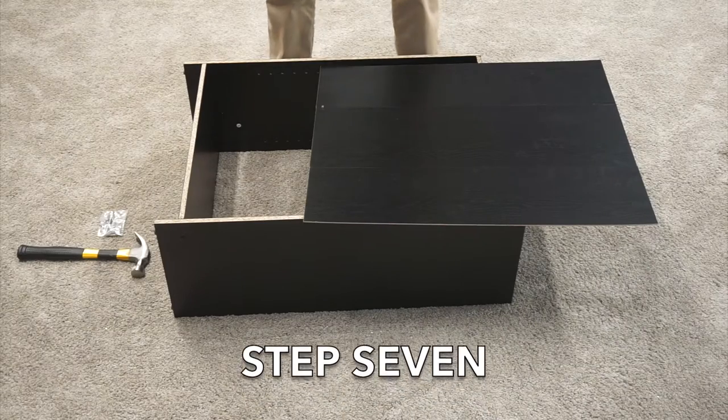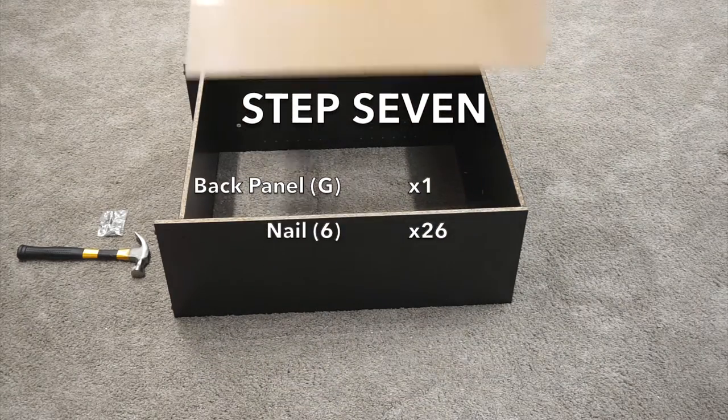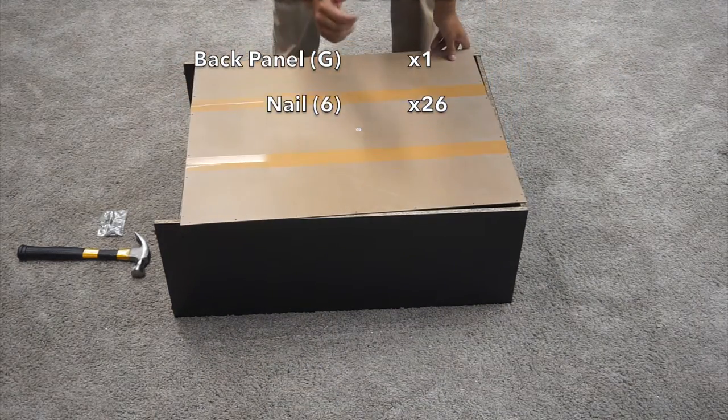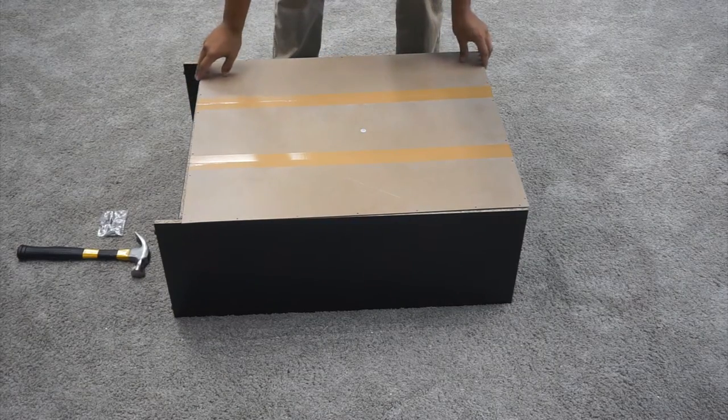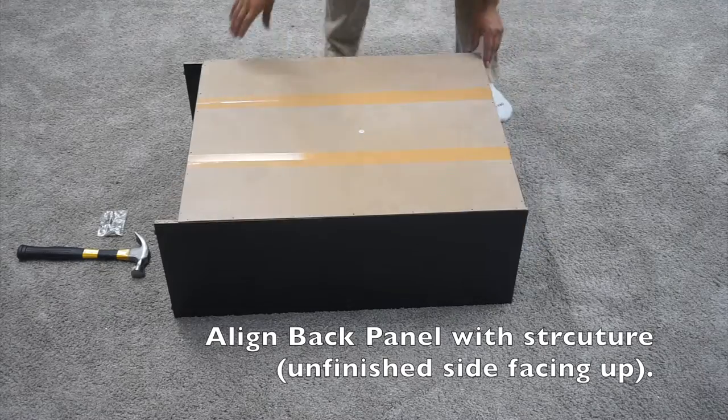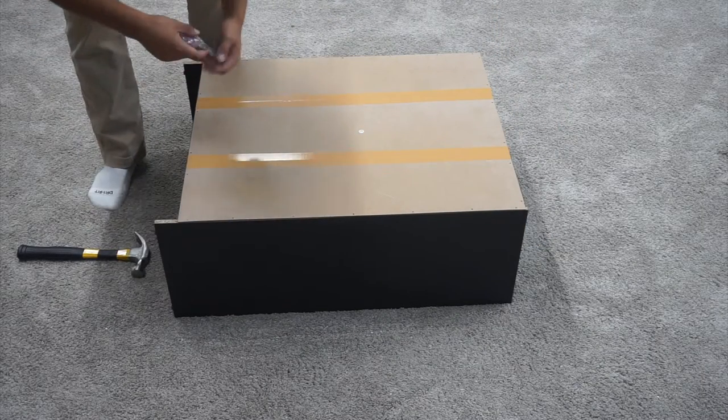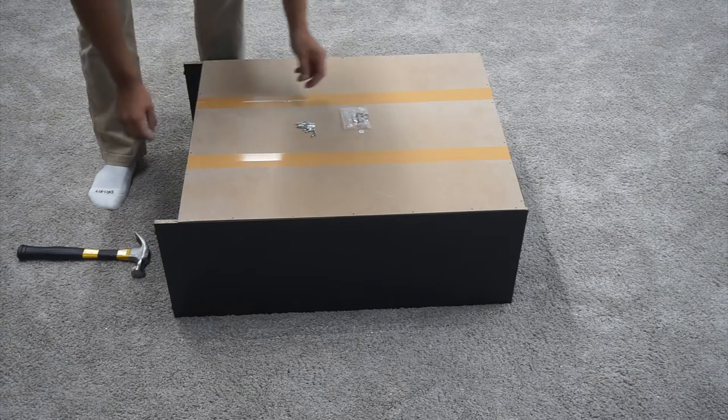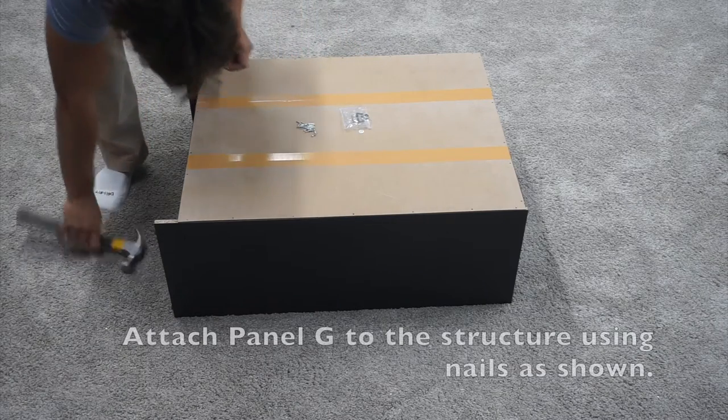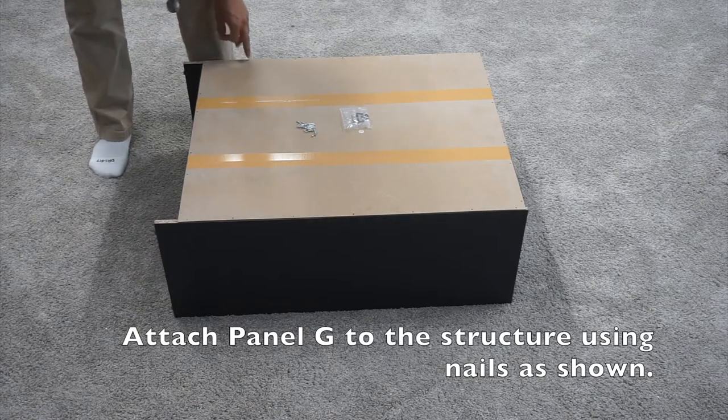For step seven, you are going to want to grab this G panel. Lay it down so the unfinished side is facing up. You want to make sure that you line it up perfectly. Then grab all your nails and a hammer and simply nail in each spot that there is a pre-drilled hole.